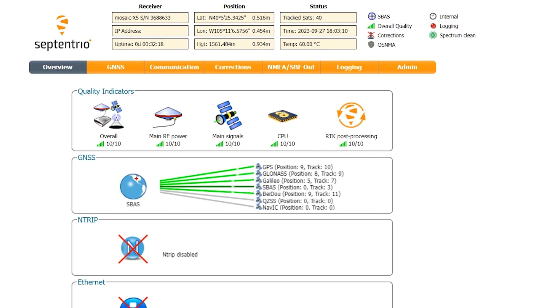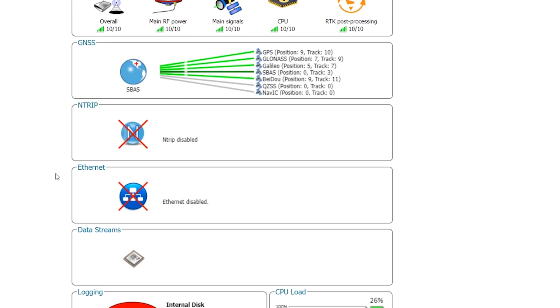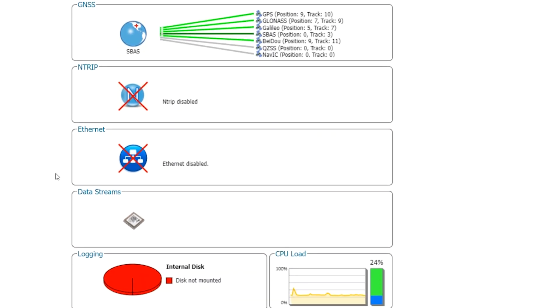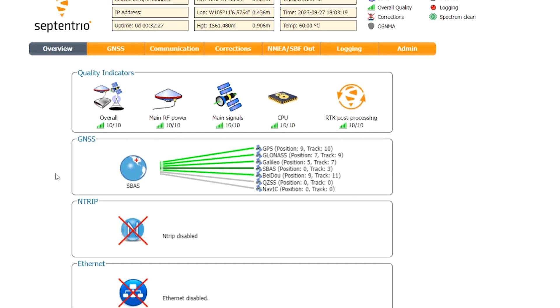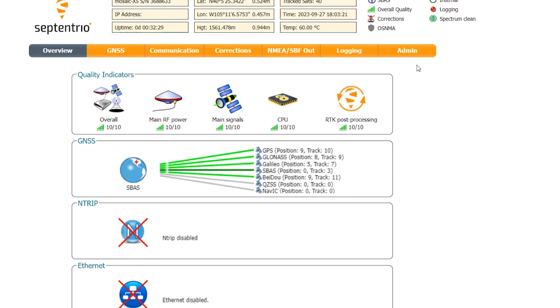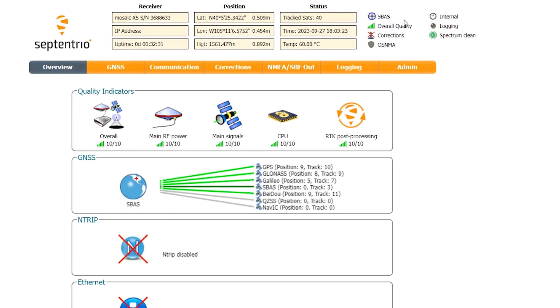So, here's the overview screen, and straight away you can see that it offers a ton of information. Multiple quality indicators, GNSS satellites, plus a little red indicator where you are on a tiny globe, end-trip data, Ethernet connection, data streams, logging info, CPU load, at-a-glance info across the top of the page including status, position, and receiver info, and there are multiple other pages.